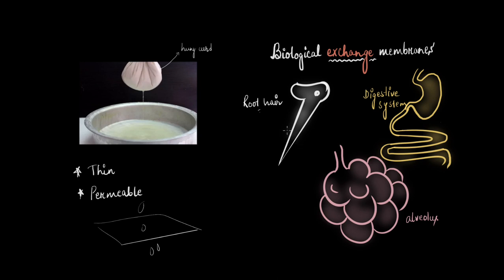So here we have the example of root hair through which the water and minerals are sucked into a plant. And then we can talk about the digestive system where the small intestine has very thin lining through which the nutrients are absorbed into our blood vessels. And then we can talk about the lungs, the alveolus, the wall of the alveolus, through which exchange of gases takes place. So in this video, let's have a closer look at this alveolar membrane.